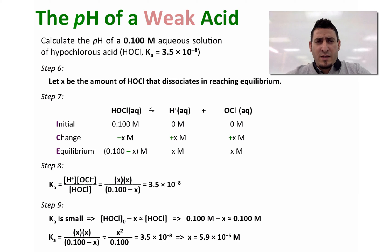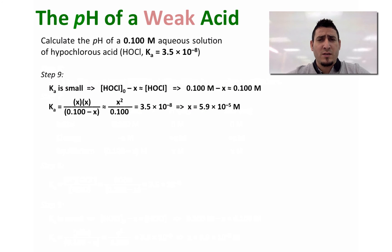Before we continue forward and find the pH, we need to check whether our assumption of neglecting x is correct or not. Step 10: We use the 5% rule to verify whether the approximation is valid.